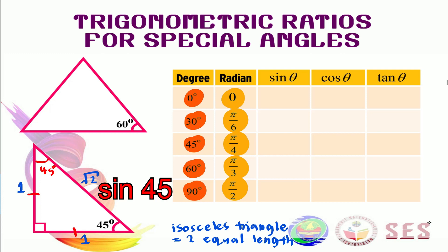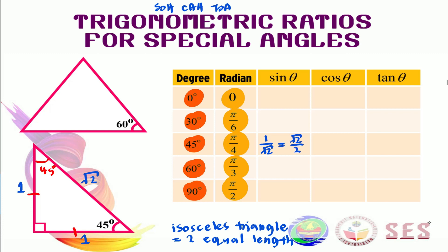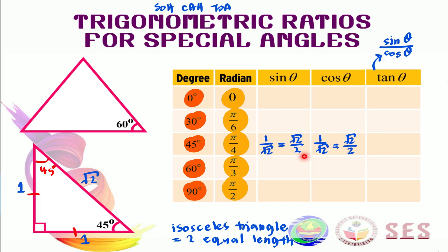From this triangle we can find the value for sine 45. Using SOH-CAH-TOA, sine is opposite over hypotenuse. So sine 45 equals 1 over square root of 2, which rationalizes to square root of 2 over 2. Because 45 degrees is complementary with itself, sine 45 also equals cosine 45, so cos 45 is also 1 over square root of 2, or square root of 2 over 2. And since tan equals sine over cosine, tan 45 equals 1.